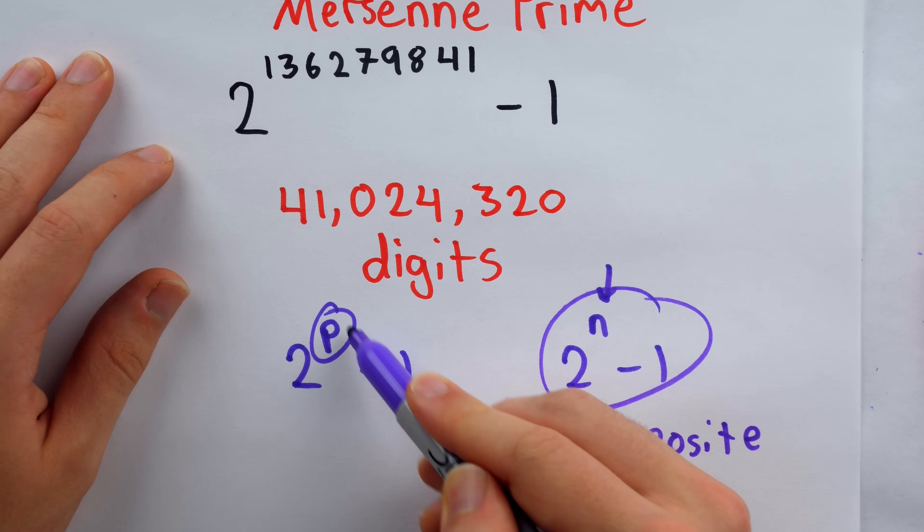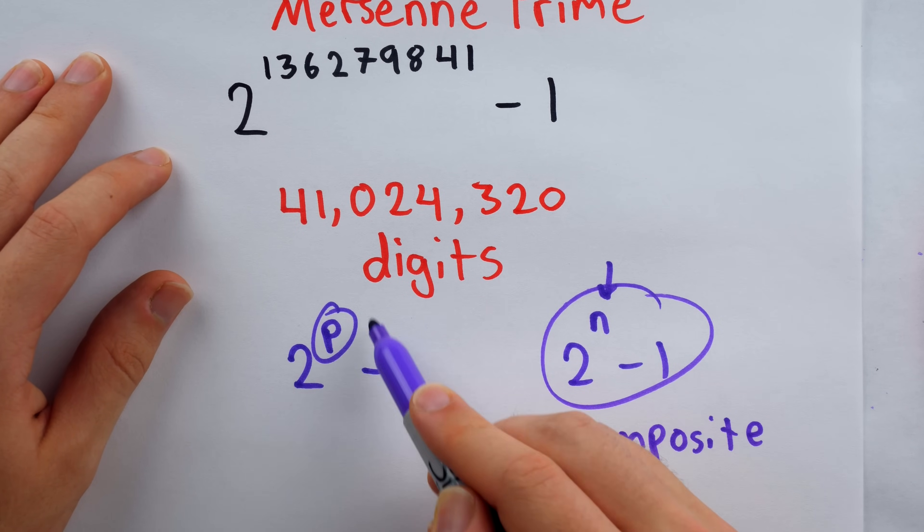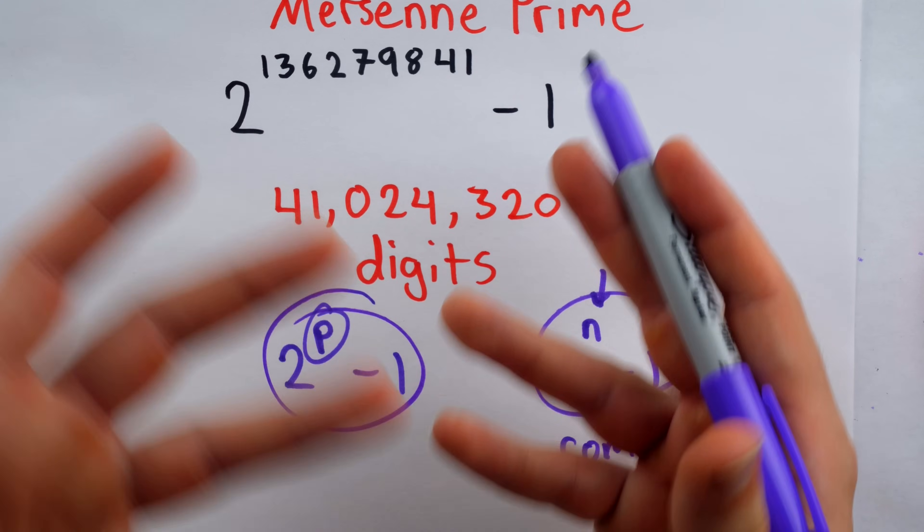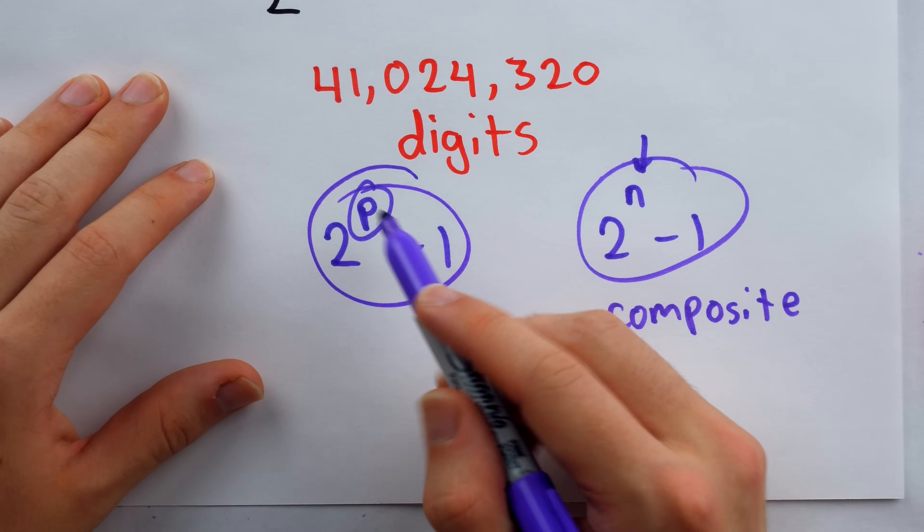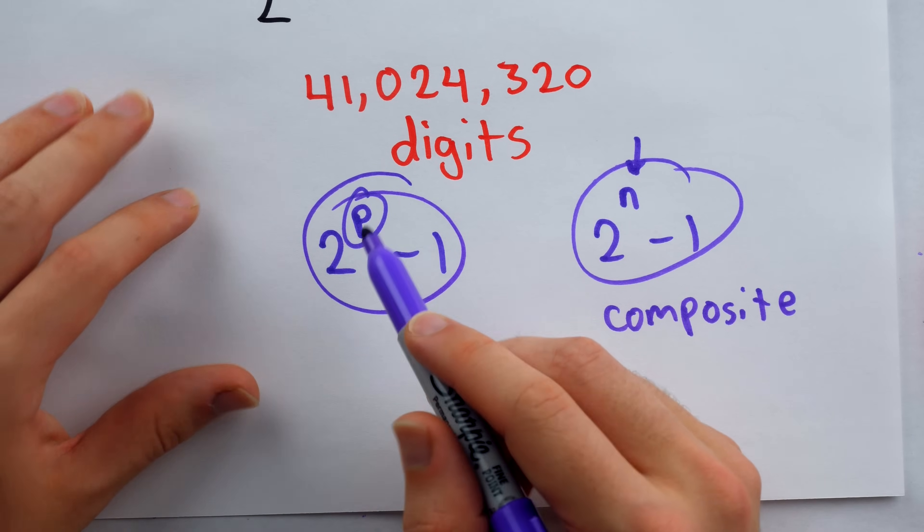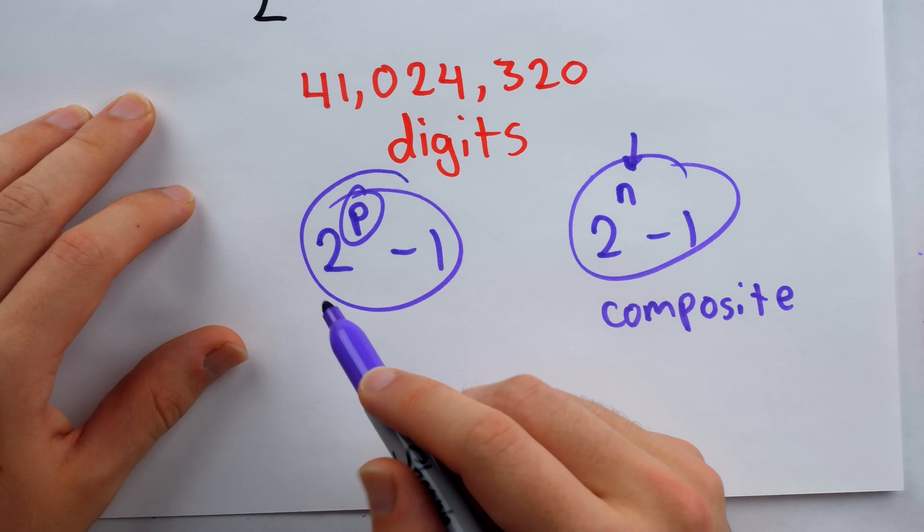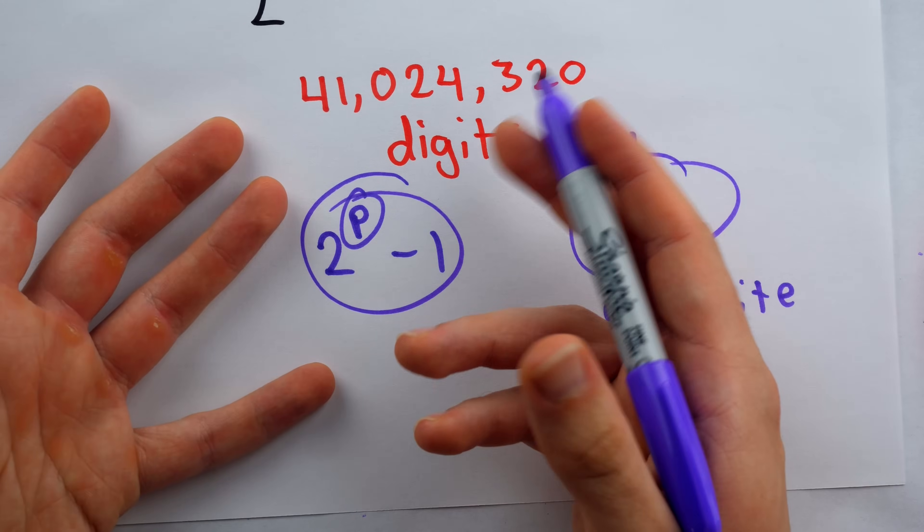Just because it has a prime power doesn't mean that this expression is actually going to be prime. But in fact, in ancient times, when these numbers were first studied and for quite some time after, it was thought that all numbers of this form were in fact prime.